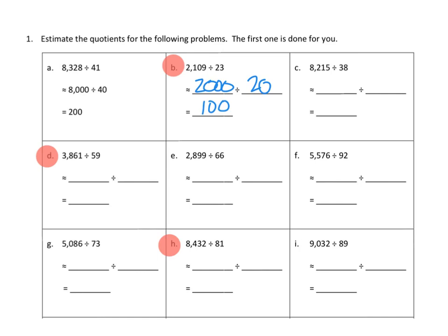Problem 1D. Our whole is fairly large and fairly complicated, 3,861, and our divisor is 59. So let's look at our divisor first. This is 5 tens and 9 ones, and that is very close to 6 tens. So I think I'm just going to say that a good estimate for our divisor is 60.